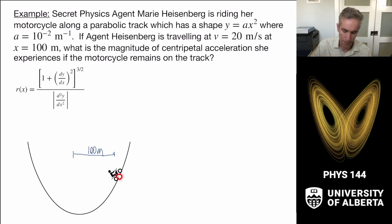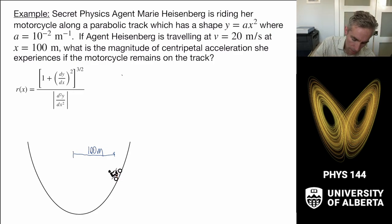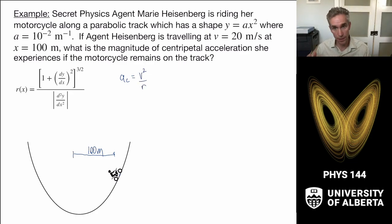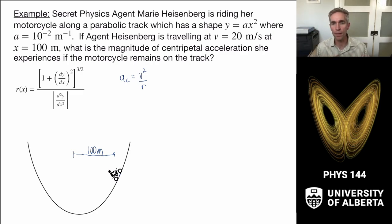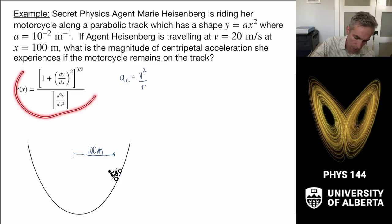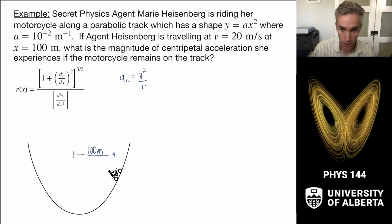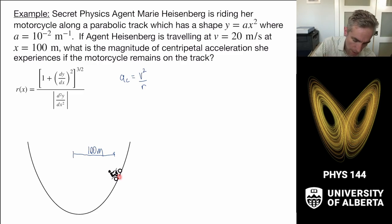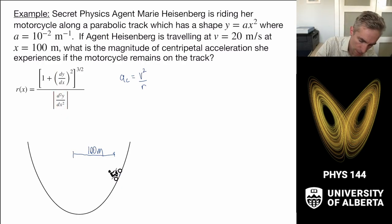This is a carefully phrased problem where we want to find her acceleration. The centripetal acceleration a_c has magnitude v squared over r. But r here isn't on a circular track — it's following a parabolic trajectory — so we need to use the equivalent radius, or the radius of curvature. We were given this radius of curvature formula in the lecture, so now we put it to use. We want to calculate at the point where Marie Heisenberg is: what is the first and second derivative of the shape of the track?